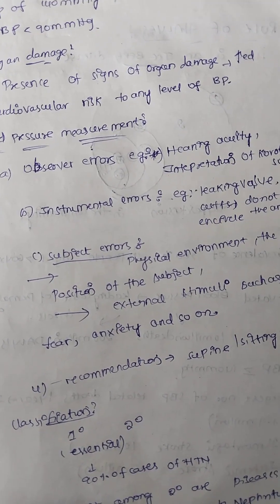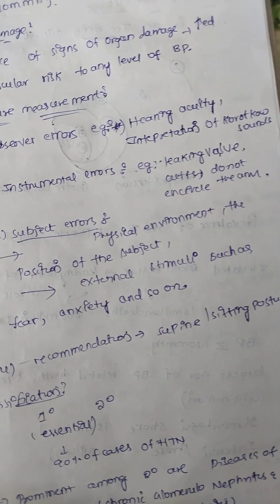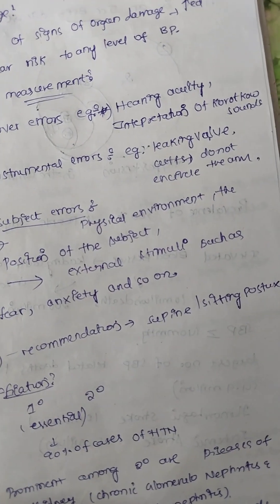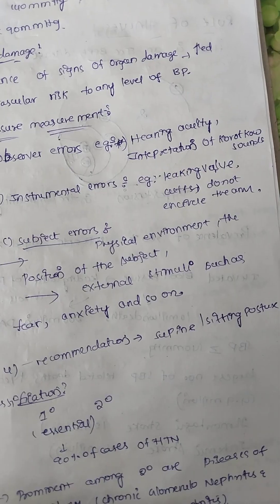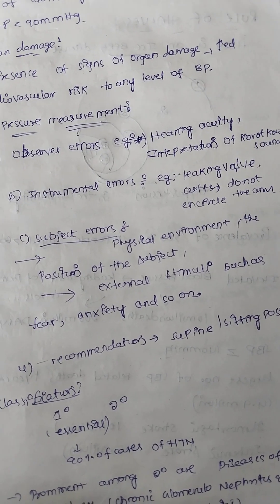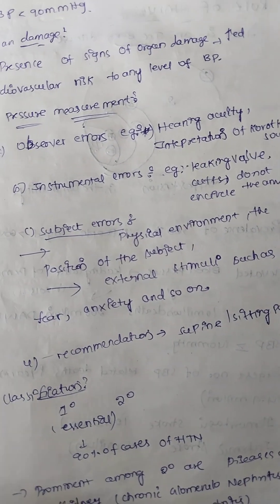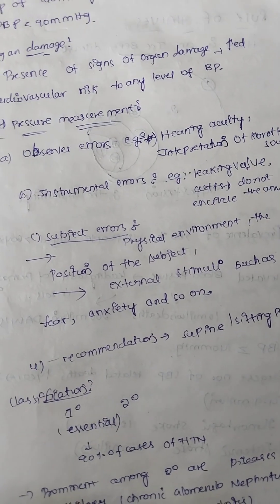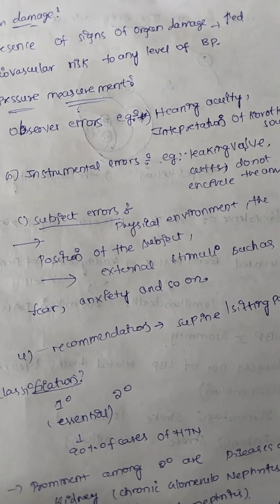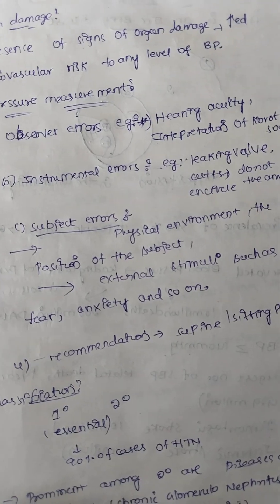For instrumental measures using a sphygmomanometer: sometimes there is a leaking valve — we use the valve and sometimes we won't keep it tight, so air will be leaking. Also, the cuff may not encircle the arm properly — sometimes we encircle the arm very loosely, sometimes very tightly — which may also cause error in the measurement.